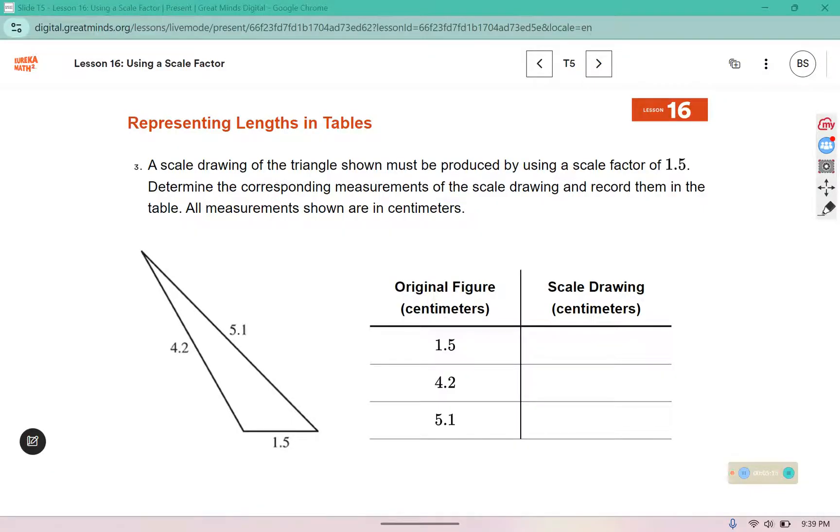In question 3, it says a scale drawing of the triangle shown must be produced by using a scale factor of 1.5. Determine the corresponding measurements of the scale drawing and record them in the table. All measurements are shown in centimeters, so we are going to calculate by using the scale factor what those new dimensions should be. Well 5 times 5 is 25, 5 times 1 is 5 plus 2 more gives us 7. Then we're going to use that place value spacer: 1 times 5 is 5 and 1 times 1 is 1. Adding those up: 5 plus 0 is 5, 5 plus 7 is 12, and 1 plus 1 is 2. I see there are 2 decimal places in the question so I need 2 in the answer, which means in the scale drawing it should have dimensions that are 2.25 centimeters.